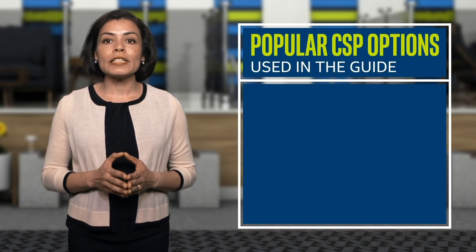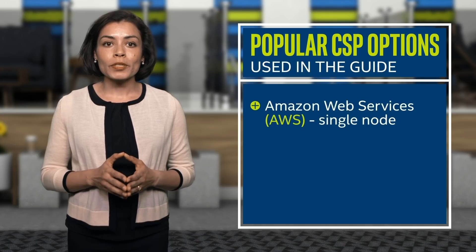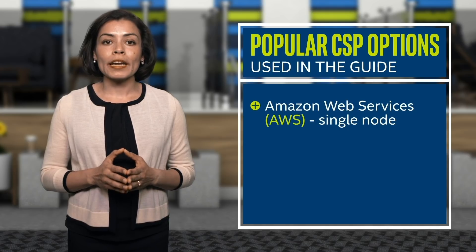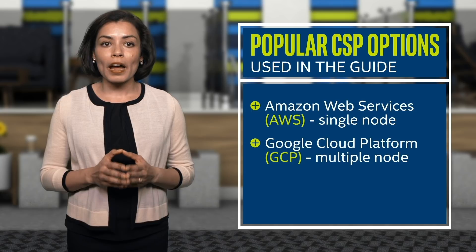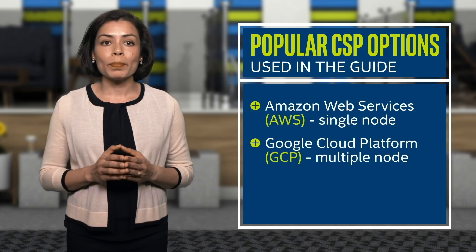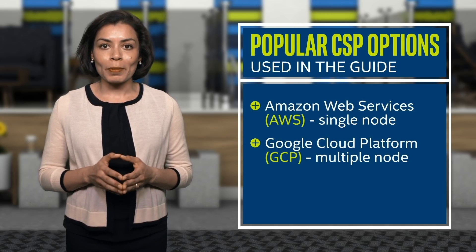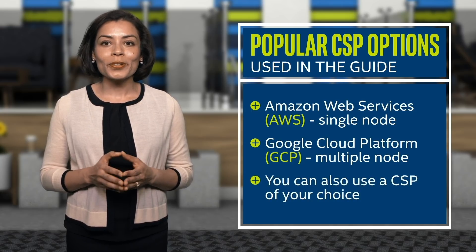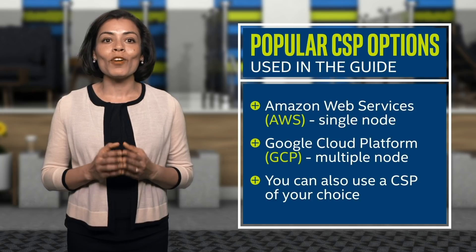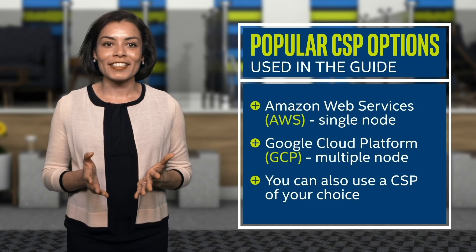The guide uses Amazon Web Services, or AWS, for single-node deployment and Google Cloud Platform, or GCP, for multi-node deployment. However, you can use a CSP of your choice. Let's start with single-node deployment.